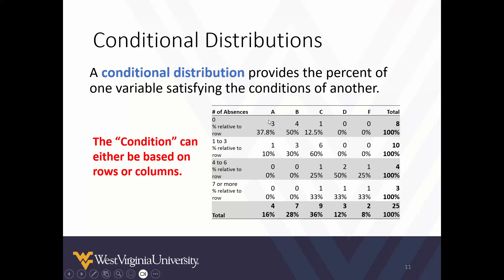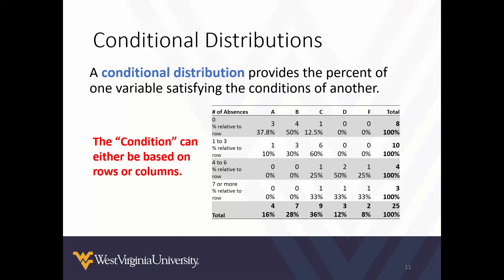Looking at the contingency table on screen, we still have our original counts for number of absences and letter grade earned. Notice the percentages: each row adds up to 100%, which is an indicator that this is a conditional distribution. This means we are looking at the distribution of letter grade per number of absences. Of those who had zero absences, 37.8% earned an A, 50% earned a B, and 12.5% earned a C.